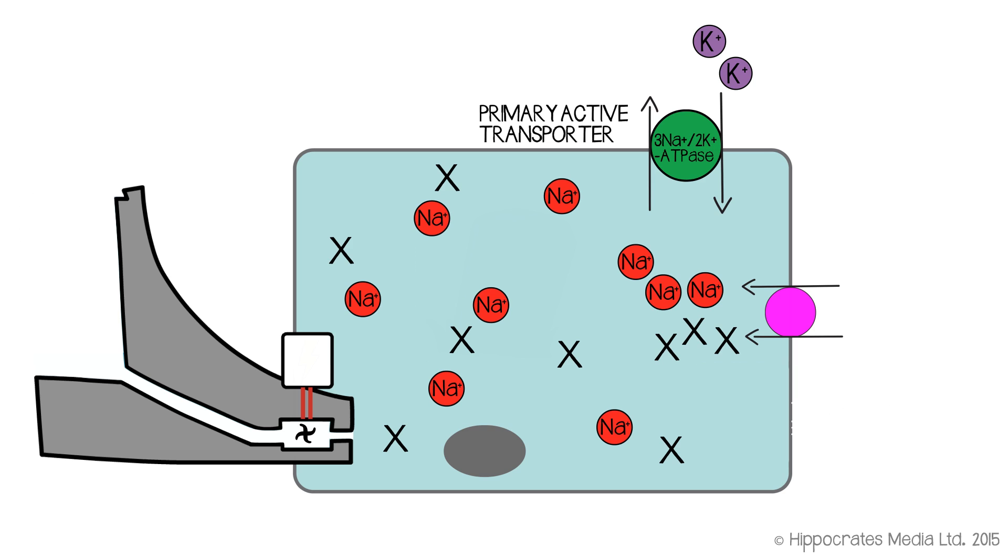What these pumps do is they push sodium back out of the cell again. Now that's against its electrochemical gradient, and that's why you need the ATP energy to be used to achieve that. So you're pumping the sodium out at the cost of ATP, maintaining the gradient for sodium, and topping up your electrochemical gradient, if you like. Topping up your dam so you can allow the process to continue, always, for the life of the cell.